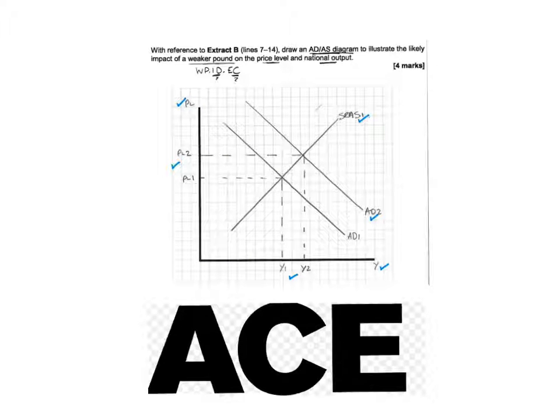What we're going to do is I'm just going to give you a general example of a past paper question. And it's a macro question. I'm just going to show you where you get the marks from. As we can see with this paper two question, with reference to Extract B, line 7 to 14, draw an aggregate demand, aggregate supply diagram to illustrate the likely impact of a weaker pound on the price level and the national output.